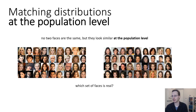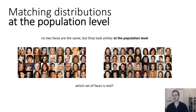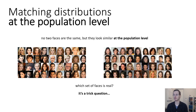You might ask: which set of faces is actually real? I'll tell you that some of these faces were generated by a latent variable model — which one do you think is real? It's actually a trick question. Both sets of faces are fake; none are real photographs. They all came from a generative model, and not even a particularly good one. So these kinds of models that match distributions at the population level can get extremely good — much better than this.